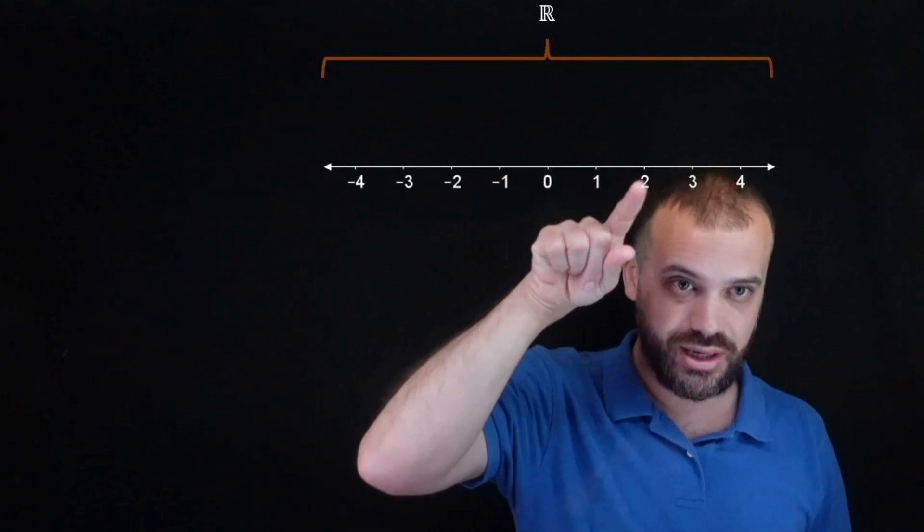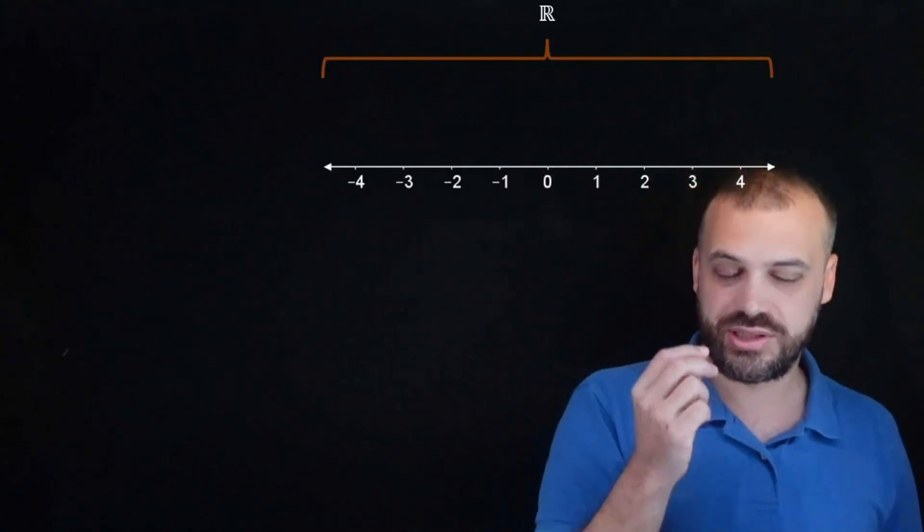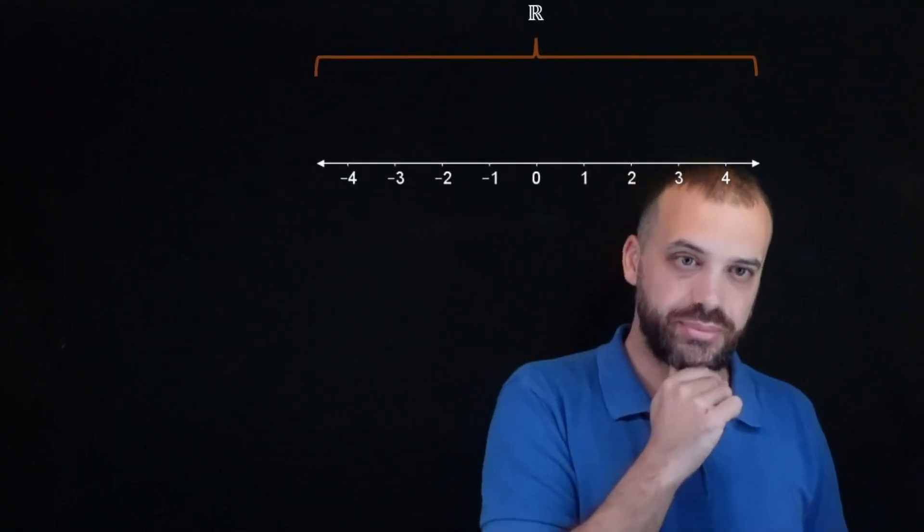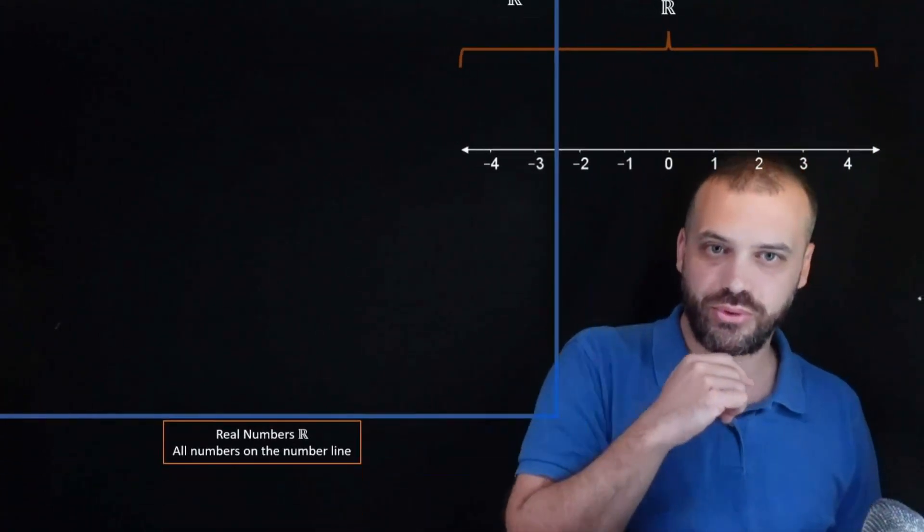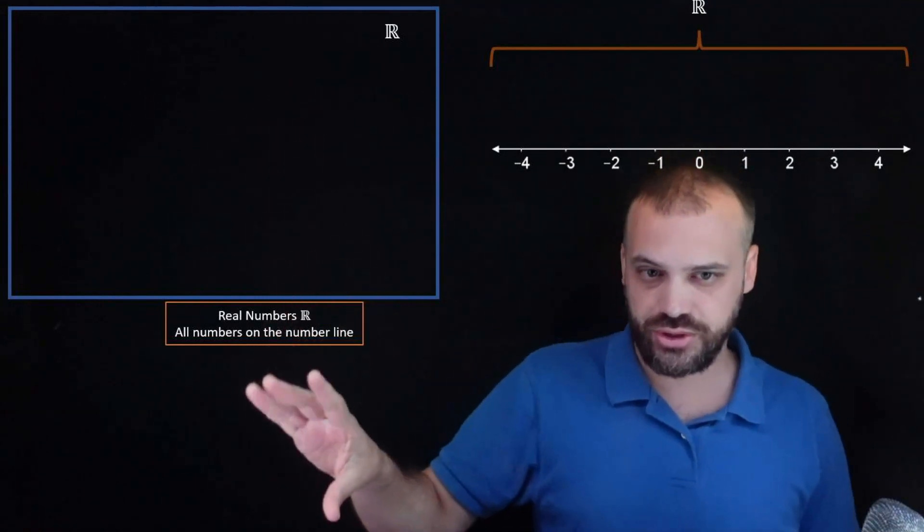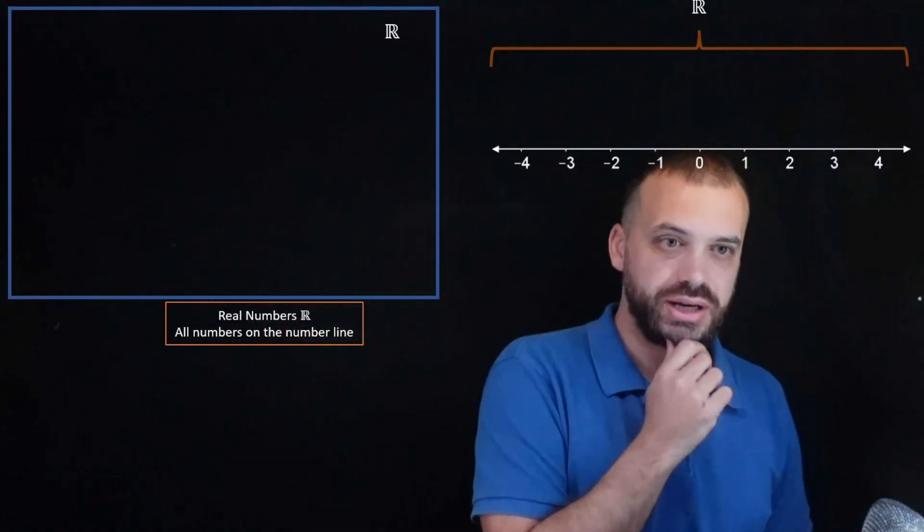See that R there with the double lines? That's the symbol that we're going to use to denote any number that sits on the number line. Now we're going to put all of our numbers here in this box and we're also going to do a little something down there as well.